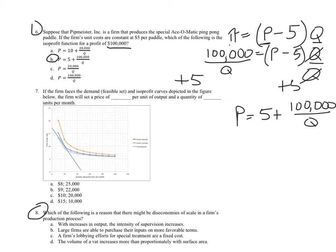Let's go to the pointer. With increases in output, the intensity of supervision increases. Well, actually that's true, and that's going to mean higher costs with increases in output, and that's the definition of diseconomies of scale. So right out of the gate, A's looking pretty good.